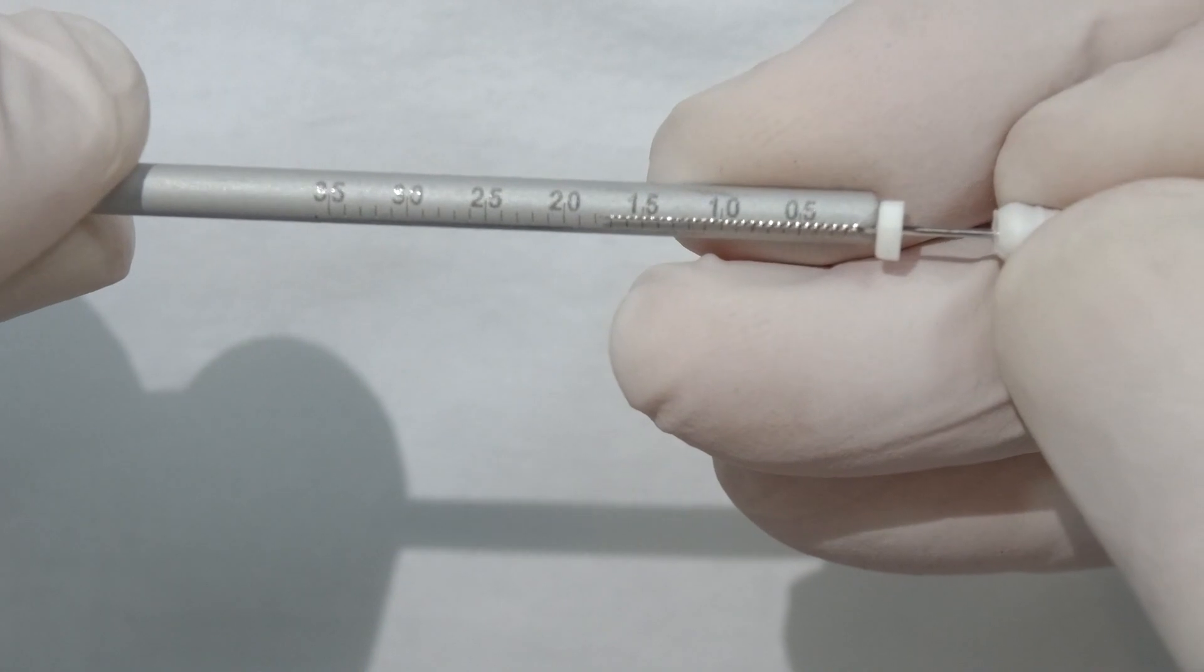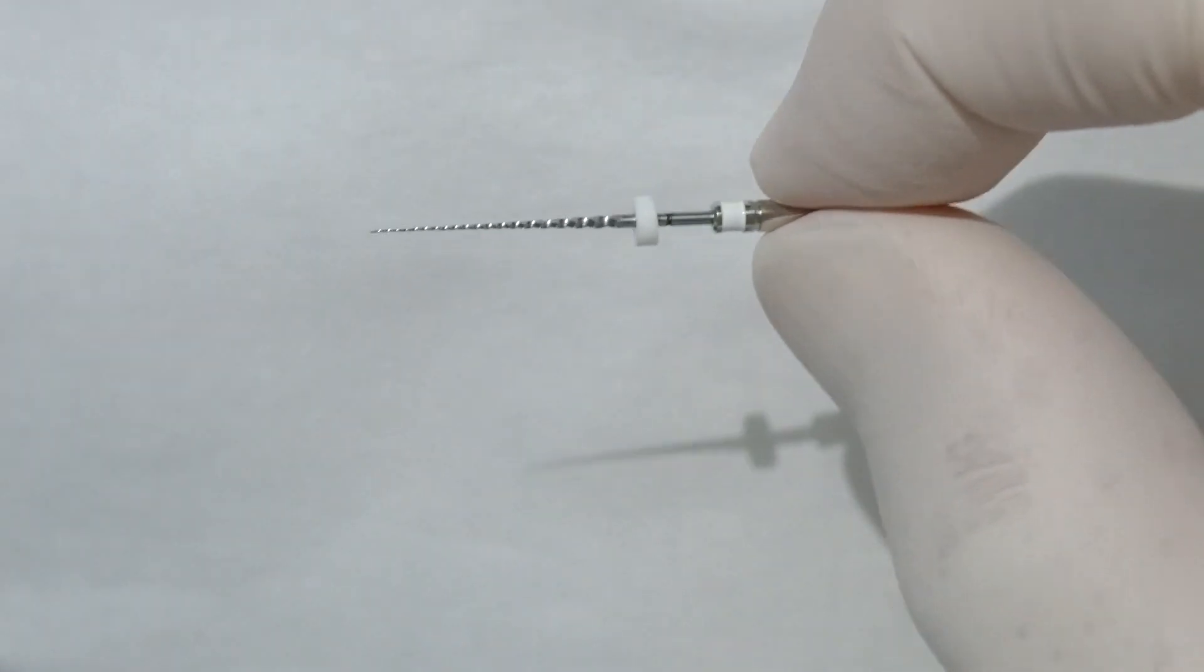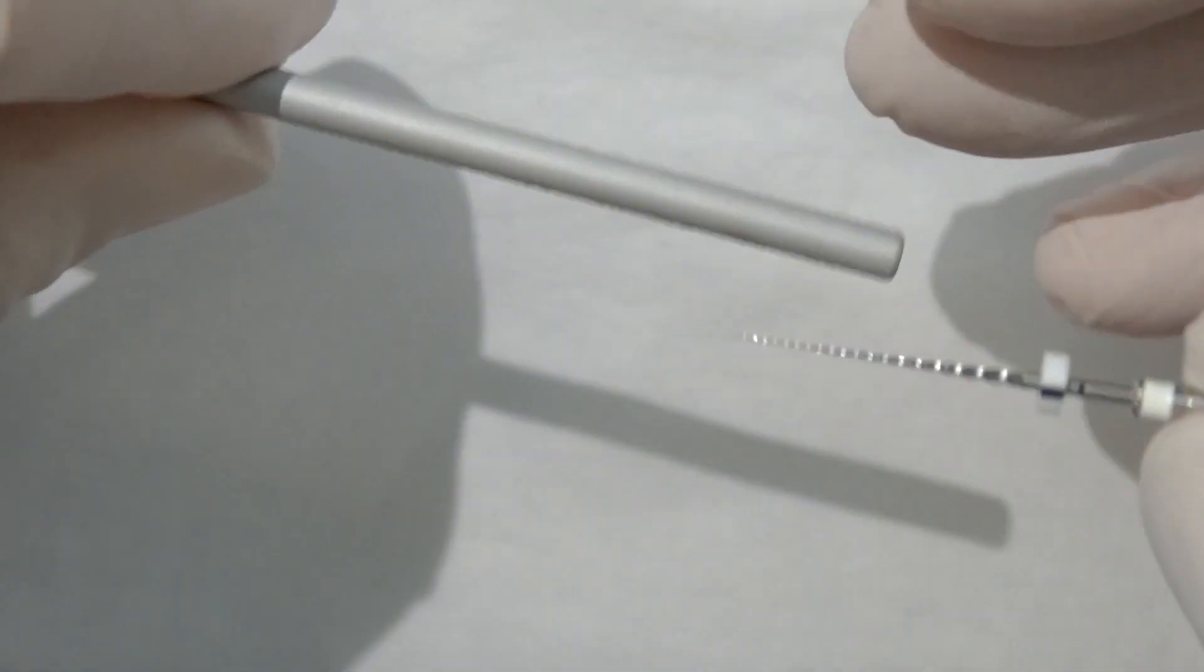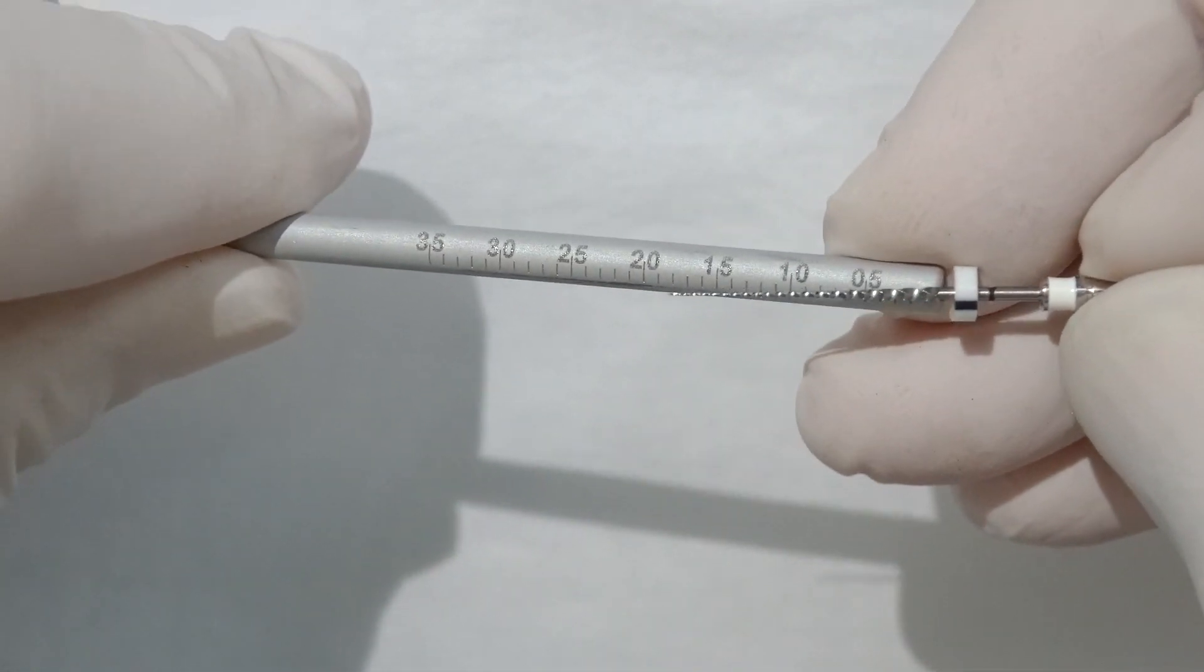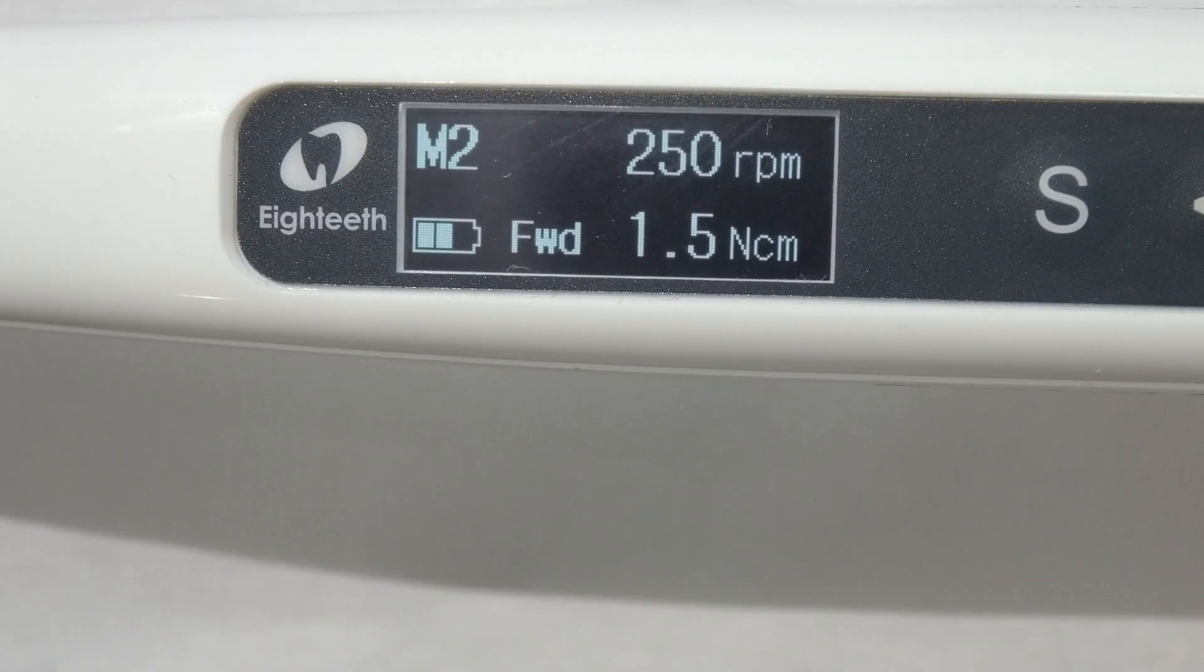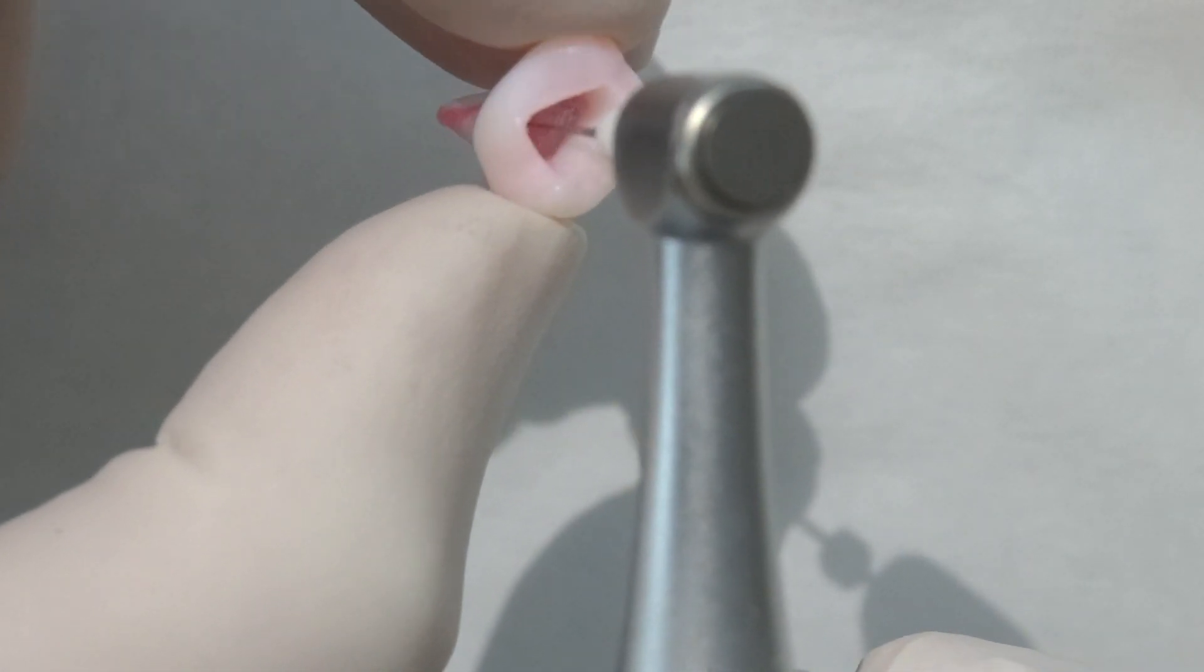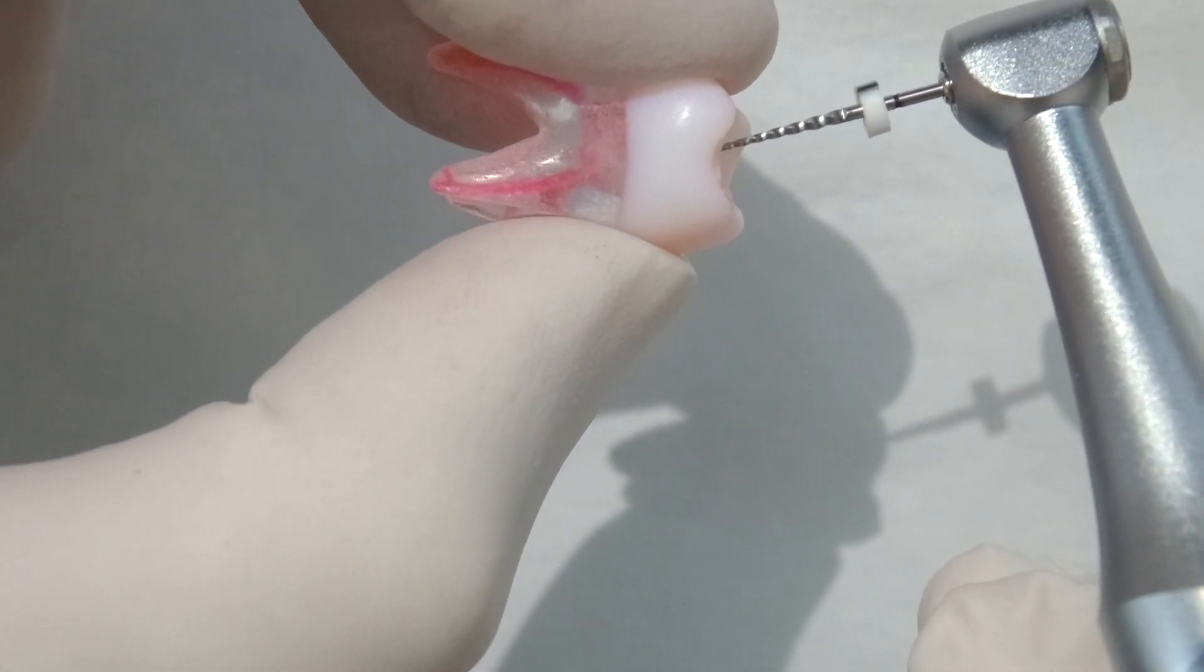Here we're going to do a guide path not using a size 15 hand file as we would often, but we've got some VFG files. These are a guide path file. It's a 16.02, but it's a rotary file, so it allows us to get a really predictable guide path, which is absolutely fundamental to then whatever rotary system we then go and do. We're going to measure that. This is our motor. We run these guide path files at 250 RPM, one and a half newton centimeter torque, just to give it a little bit of protection, and it's just as simple as introducing it into the canal.